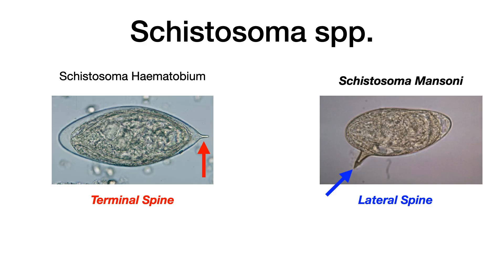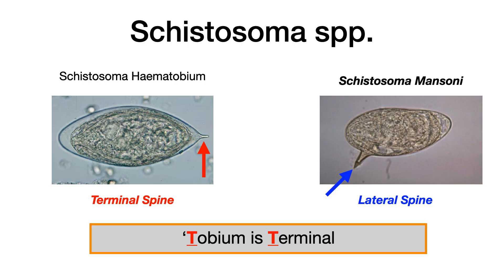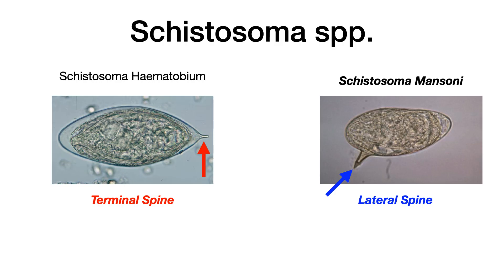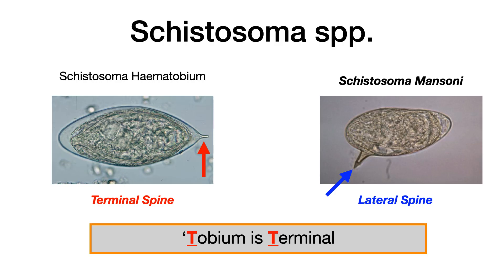The way to memorize this: 'tobium is terminal' — the T in hematobium stands for terminal spine. If tobium is terminal, then by the process of elimination mansoni must be lateral. You don't even have to worry about japonicum because it just doesn't show up on exams.